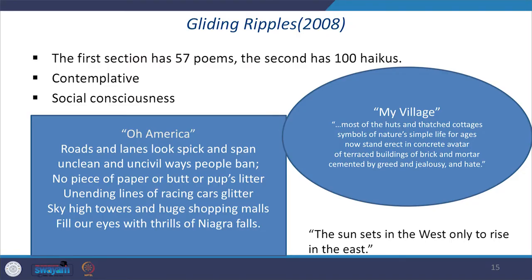Let us turn to 'Gliding Ripples,' which came out in 2008. This collection also talks about the ills of society and contains serious contemplation — we can call Reddy a social thinker, not only a poet. He cannot confine his eyes to the grim realities around him. The first section of 'Gliding Ripples' has 57 poems and the second has a hundred haikus. Since haiku is our subject, we can take some poems from the collection.